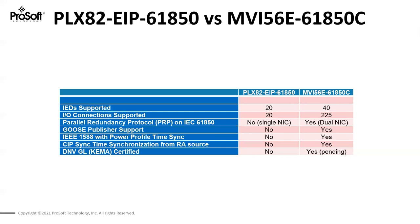GOOSE Publisher allows us to push data from ControlLogix directly to the protective relays. Previously on our gateway module we were only doing that with hardwired IO. We also support IEEE 1588 with the power profile, which allows us to synchronize those protective relays. Since we also support SIP sync time synchronization, it is now very transparent to pass from SIP sync time synchronization over to 1588 with power profile support.